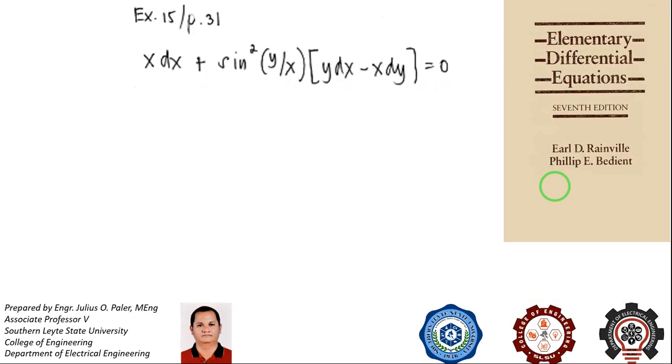We are asked to find the general solution of the differential equation x dx plus the quantity sin squared of y over x times the quantity y dx minus x dy equals zero.